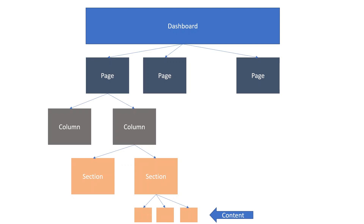So the section contains all of the content. To reiterate: a dashboard consists of one or more pages, a page consists of one or more columns, a column consists of one or more sections, and a section consists of one or more content items that you want to view. That's the typical structure of a dashboard.